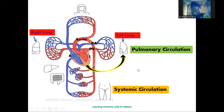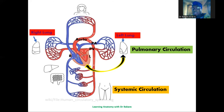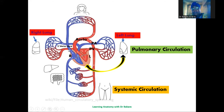Going further in the systemic circulation, the cells take up the oxygen and nutrients and use them. The blood then becomes deoxygenated and is carried by the different veins in the body. From the upper part of the body, it is released into the superior vena cava. Then we have the inferior vena cava collecting venous blood from the lower part of the body. The superior and inferior vena cava unite to form the vena cava near the right atrium.